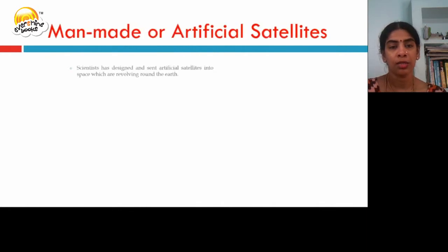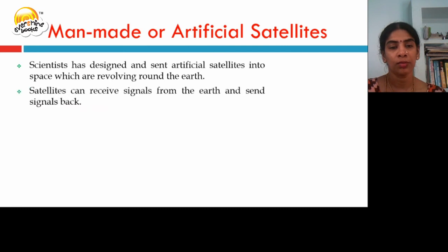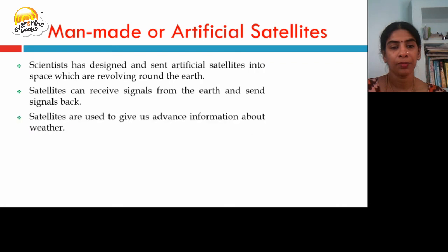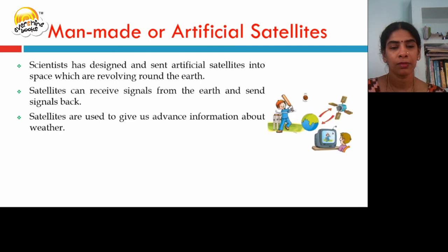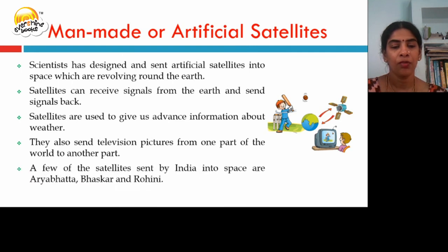Scientists have also designed artificial satellites sent into space, which revolve around the earth. Satellites can receive signals from the earth and send signals back. They help give advance information about the weather and send pictures from one part of the world to another. A few satellites sent by India into space are Aryabhatta, Bhaskar, and Rohini.